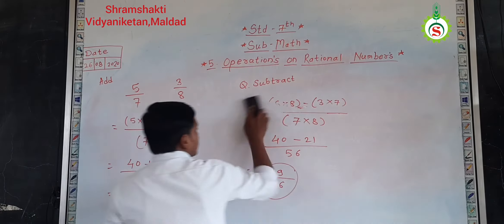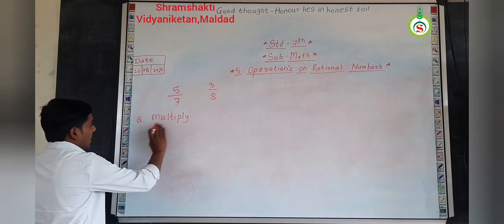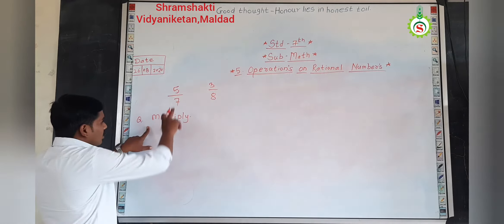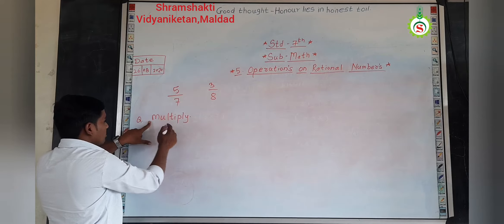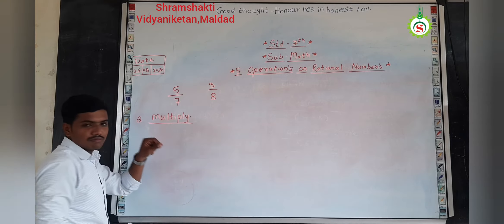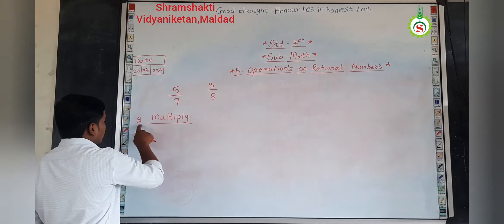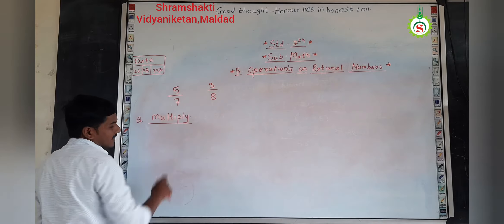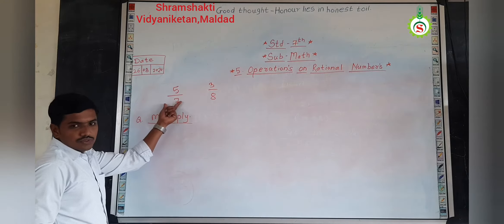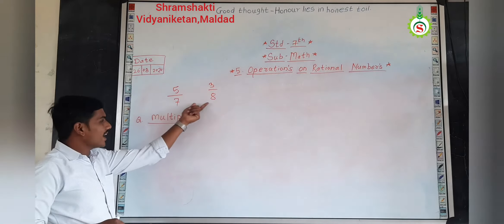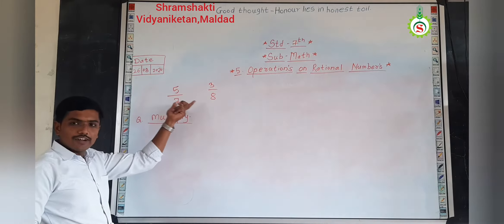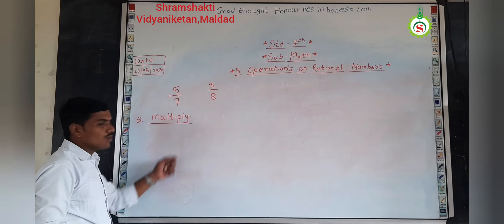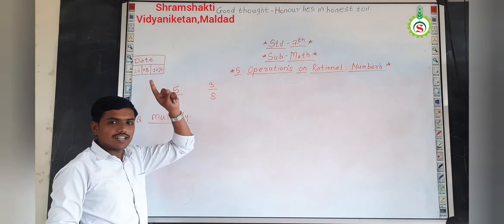Now, after the subtraction, the third question will be like that — we will have to perform the third operation on the rational number, that is multiplication. So, the question will be: multiply these rational numbers. Now, before multiplying, we have added these numbers and also we have subtracted these numbers. Now, we have to see how to multiply two rational numbers.